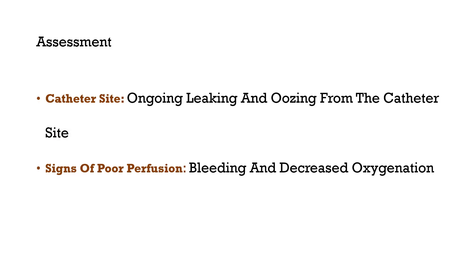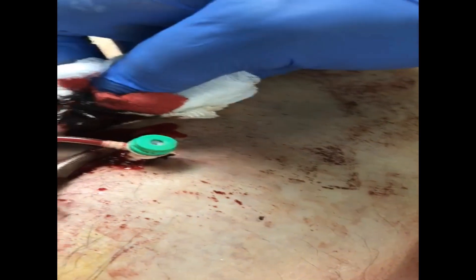During circuit inspection at the cannula site, we find ongoing leaking and oozing from the cannula insertion site. There are also signs of poor perfusion due to bleeding — a drop in hemoglobin, hypoxia, and decreased oxygen saturation. This bleeding is reflected in the patient's clinical signs: tachycardia, dropping blood pressure, dropping hemoglobin, and increasing tachypnea.